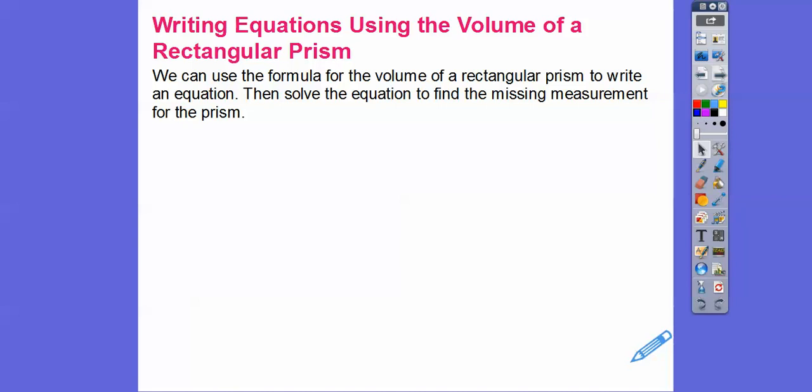So anyways, writing equations using the volume of a rectangular prism. We can use the formula for the volume of a rectangular prism, which is length times width times height, to write an equation. Then we'll solve the equation to find the missing measurement of the prism.